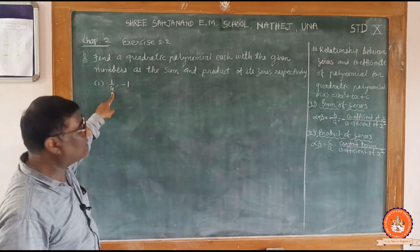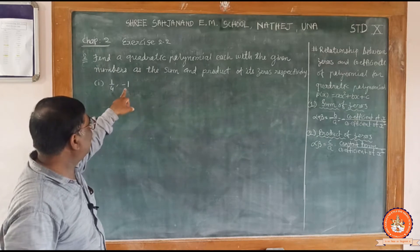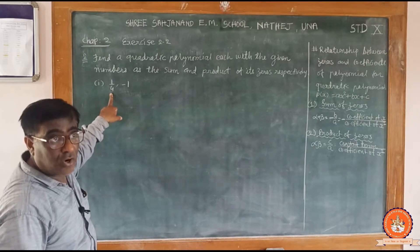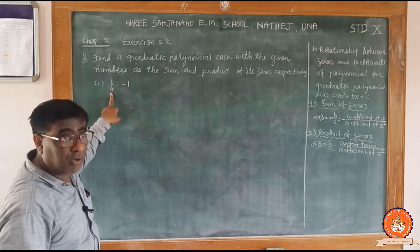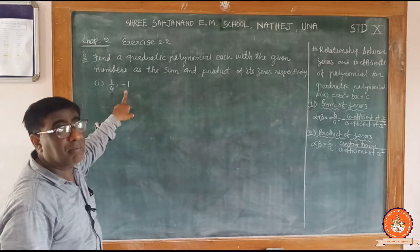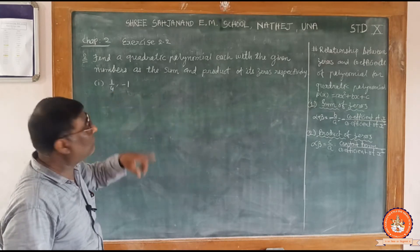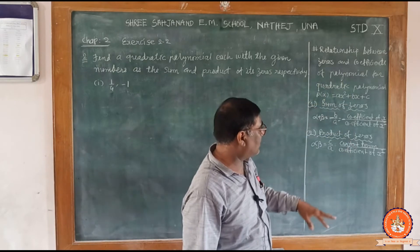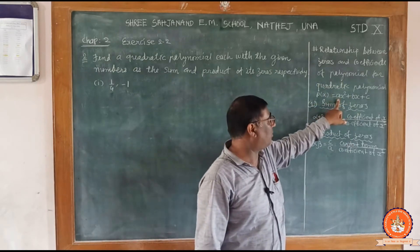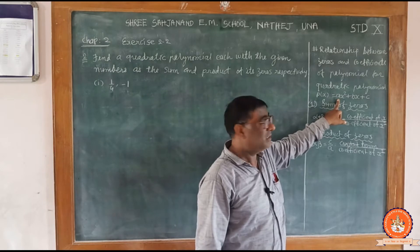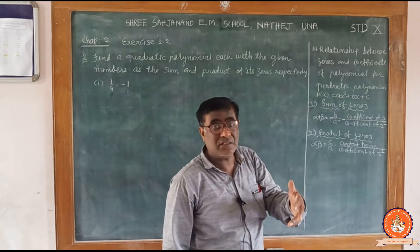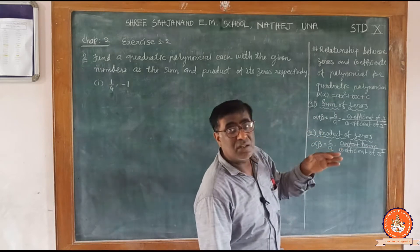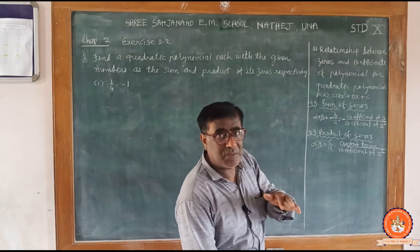The first number given is the sum of zeros of the quadratic polynomial and minus 1 is the product of the same quadratic polynomial, and we have to find this quadratic polynomial. We know the relationship between zeros and coefficients.